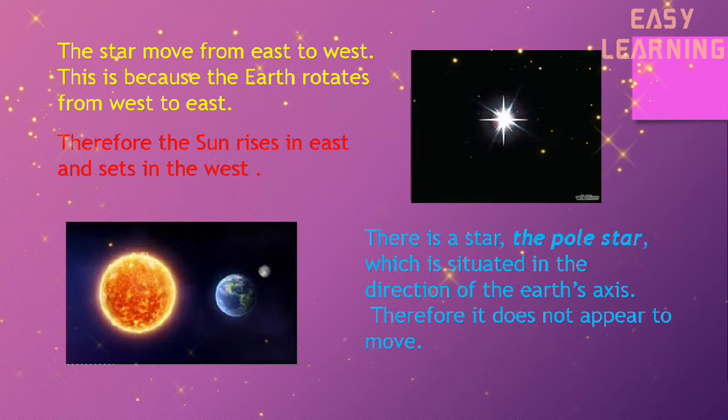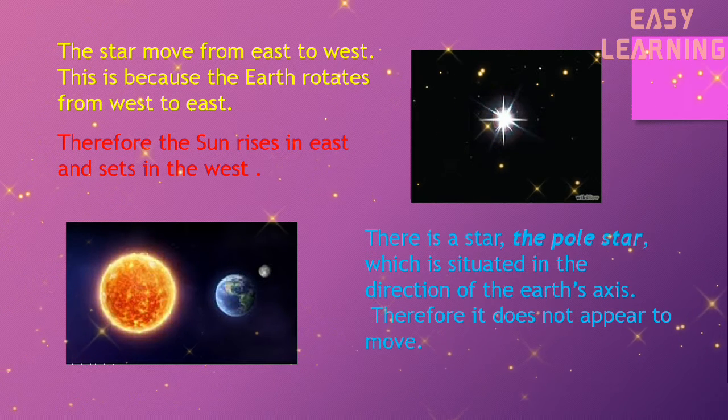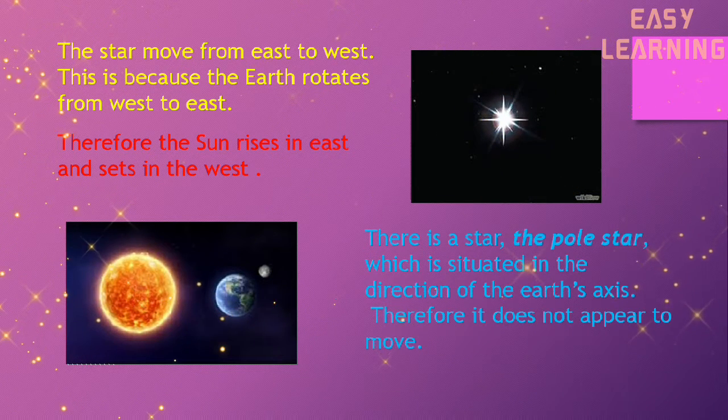There is a star, the pole star, which is situated in the direction of the Earth's axis. Therefore, it does not appear to move.